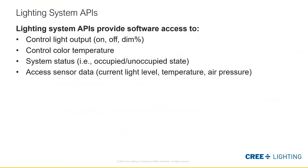So how do we do this in lighting? If you've explored our APIs for our intelligent lighting systems, here are just some of the typical types of access points: controlling light output, changing color temperature, seeing system status like whether a group is occupied or unoccupied, and accessing sensor data — current light level, temperature, air pressure. As you can imagine, other systems besides the lighting system would find these types of information very useful.